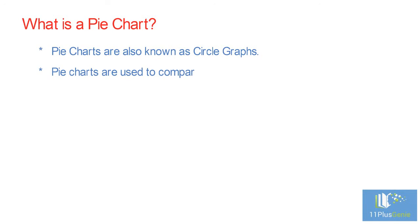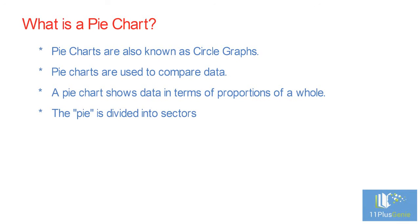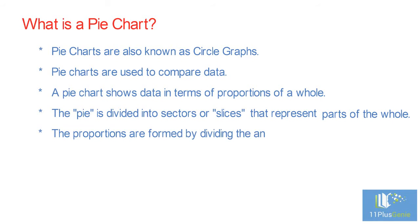What is a pie chart? Pie charts are also known as circle graphs. Pie charts are used to compare data. A pie chart shows data in terms of proportions of a whole. The pie is divided into sectors, or slices, that represent parts of the whole. The proportions are formed by dividing the angles at the centre.